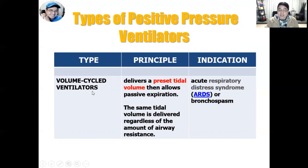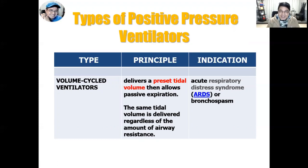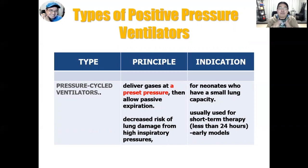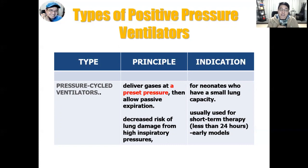There are several types of positive pressure ventilators. Volume cycle ventilators deliver a preset tidal volume — normal is 400 to 800 mL — then allow passive expiration; the same tidal volume is delivered regardless of airway resistance. This is indicated for clients with ARDS and bronchospasm. Pressure cycle ventilators deliver gases at preset pressures and allow passive expiration. Their main advantage is decreasing the risk of lung damage from high inspiratory pressures; they are indicated for neonates and patients requiring short-term therapy under 24 hours.